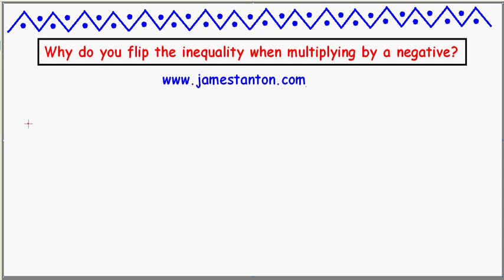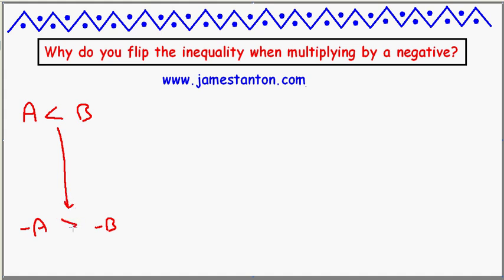Welcome. Today I'd like to address a basic question that a lot of people have trouble with: explaining that if I have an inequality, say a is less than b, and I want to multiply through by a negative number, like negative 1, so I'll have negative a and negative b — apparently the rule is that you're meant to flip the inequality sign. So why on earth does multiplying by a negative quantity force you to flip the inequality sign? That's the question of today.